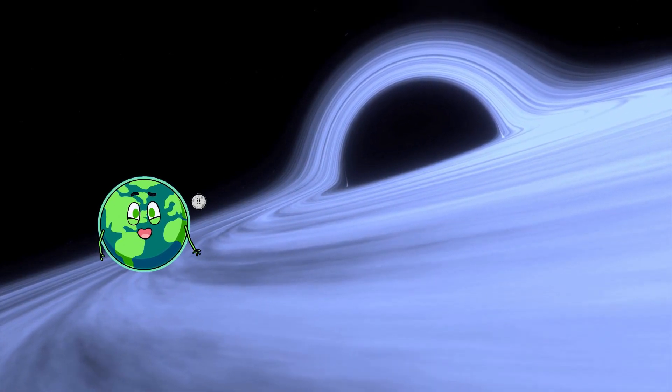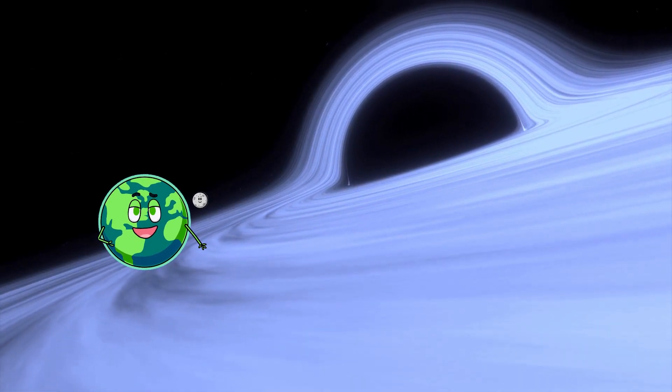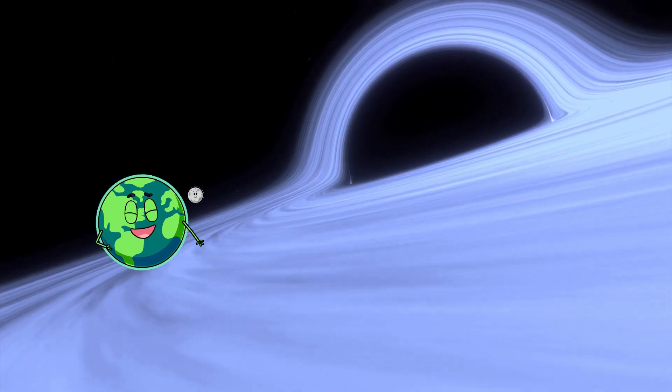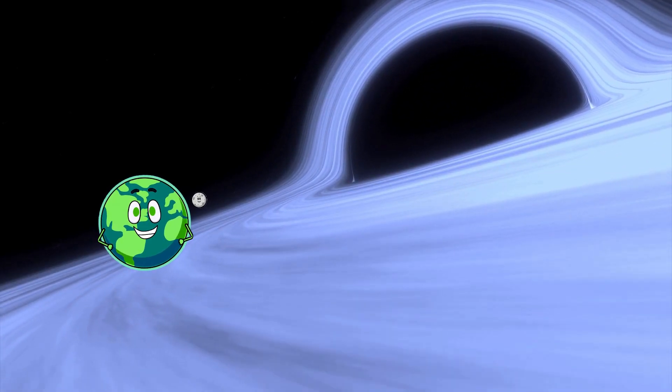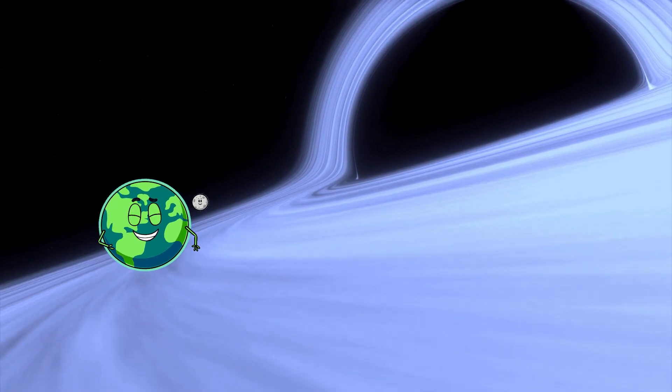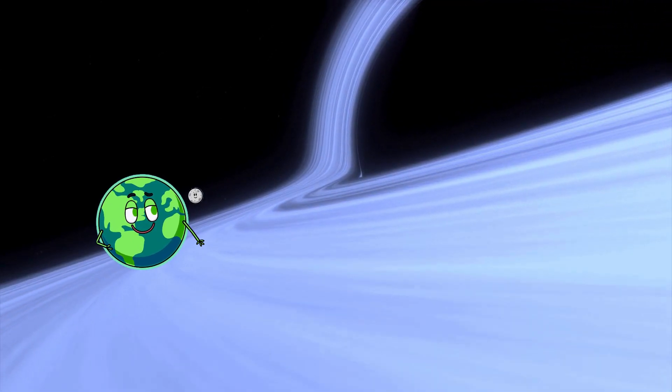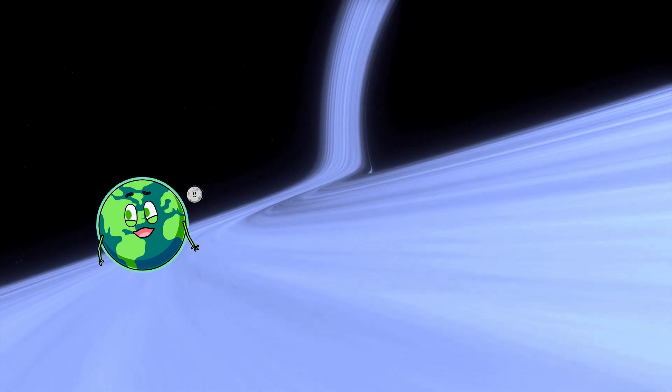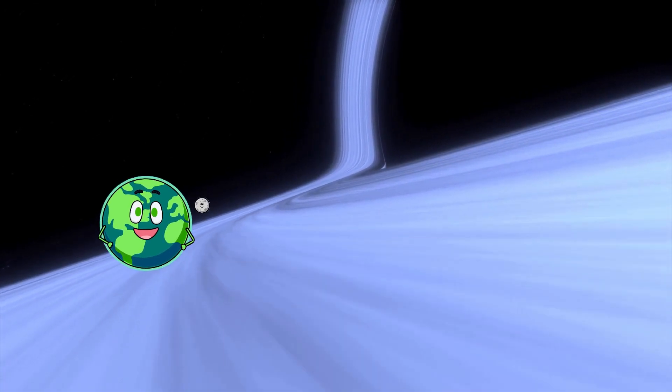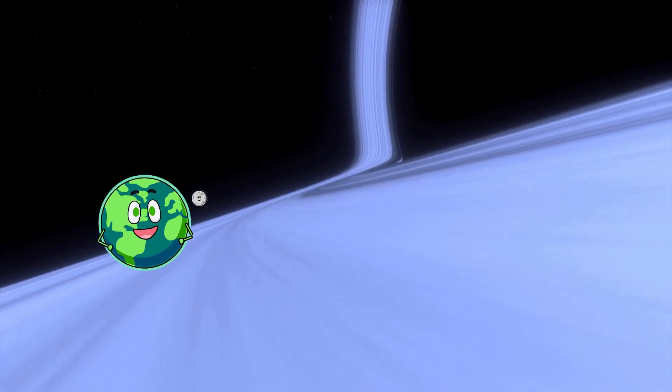But where's the closest black hole to us? That would be V616 Monocerotis, also known as V616 Mon. It's about 3,000 light-years away. In space terms, that's like being our next-door neighbor. But don't worry, it's still too far to affect us here on Earth.